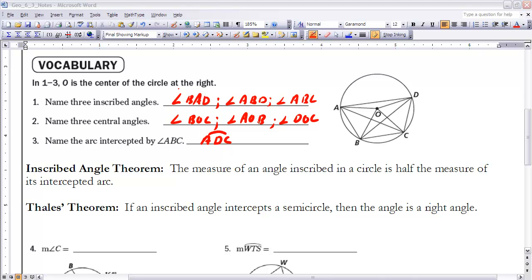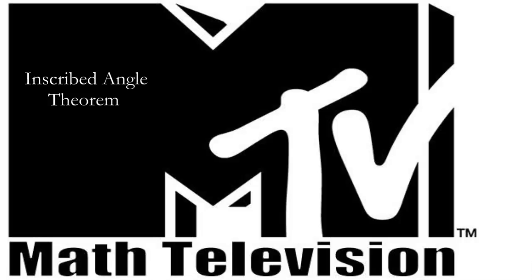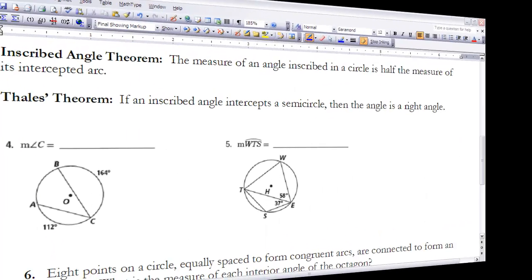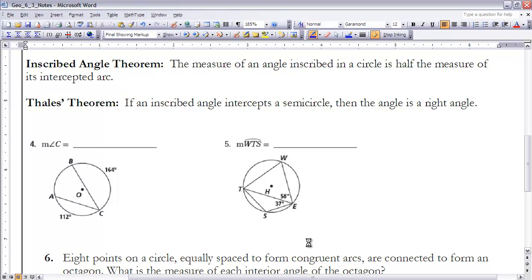Finally number three, it says name the arc intercepted by ABC. Here's angle ABC right here - A, B, C. So that means that the arc that would be intercepted by that would be this arc right here, that major arc. I could call that arc ADC or I could call it CDA, but you need to have those two endpoints and then one point in between because it's greater than 180 degrees.